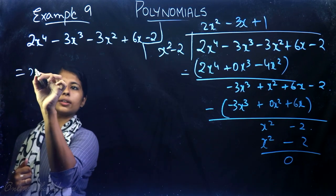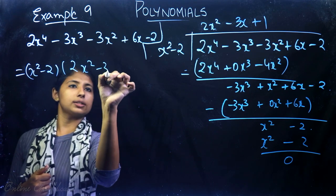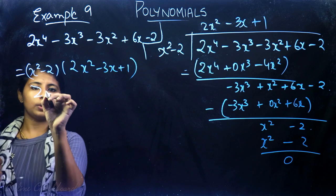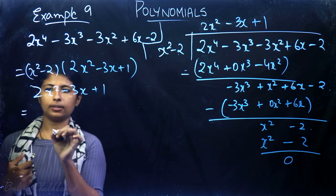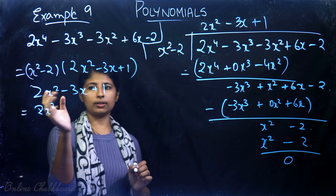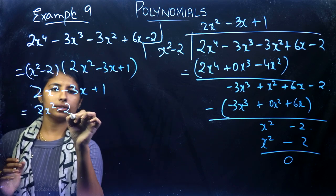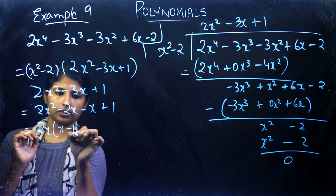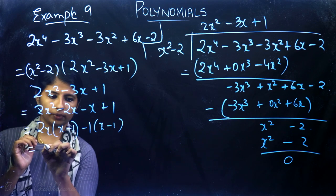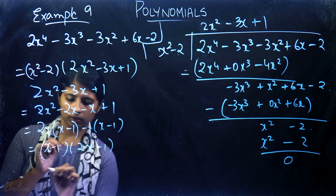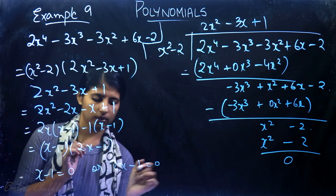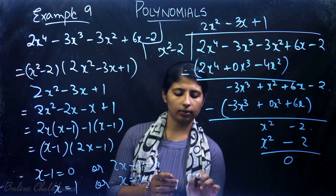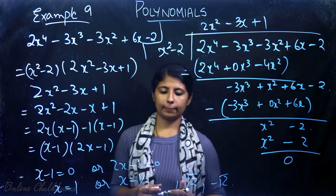So 2x⁴ − 3x³ − 3x² + 6x − 2 = (x² − 2)(2x² − 3x + 1). Now factorize 2x² − 3x + 1 by splitting the middle term: 2x² − 2x − x + 1 = 2x(x − 1) − 1(x − 1) = (2x − 1)(x − 1). So the remaining zeros are x = 1 and x = 1/2. Together with √2 and −√2, all four zeros of the polynomial are √2, −√2, 1, and 1/2.